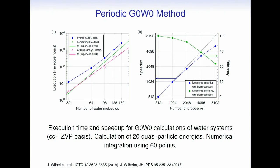The GW code shows N⁴ scaling with system size, as seen in a double-logarithmic plot — consistent with the underlying RPA calculation. The parallel scaling is also very good. For a system of 64 water molecules, these calculations with 20 quasi-particle energies take about a couple of minutes on a machine with a few thousand processes.